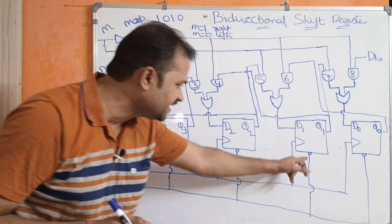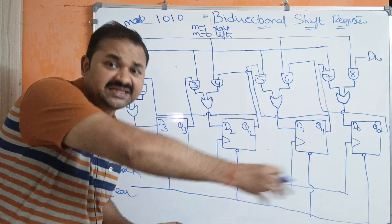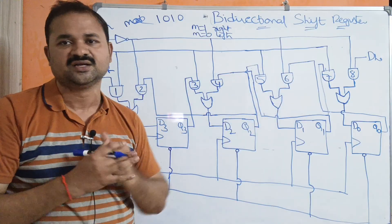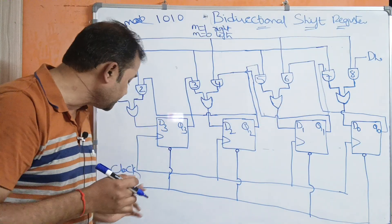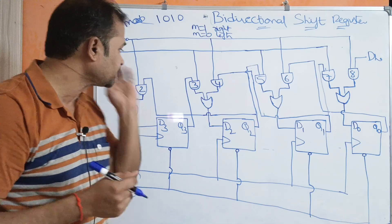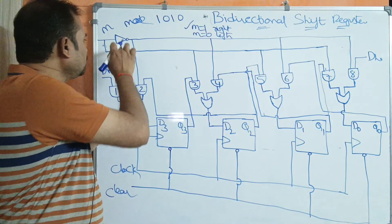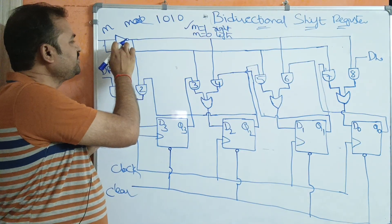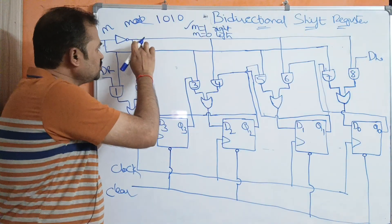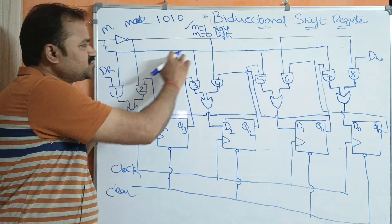This input is the clear input, which is useful in order to clear the flip-flops. After performing the shift right operation, the circuit will contain some data, so in order to clear the flip-flops we can use the clear input. For the shift right operation, M value is 1. This line represents the complemented line through a NOT gate, while this line represents the direct actual line.